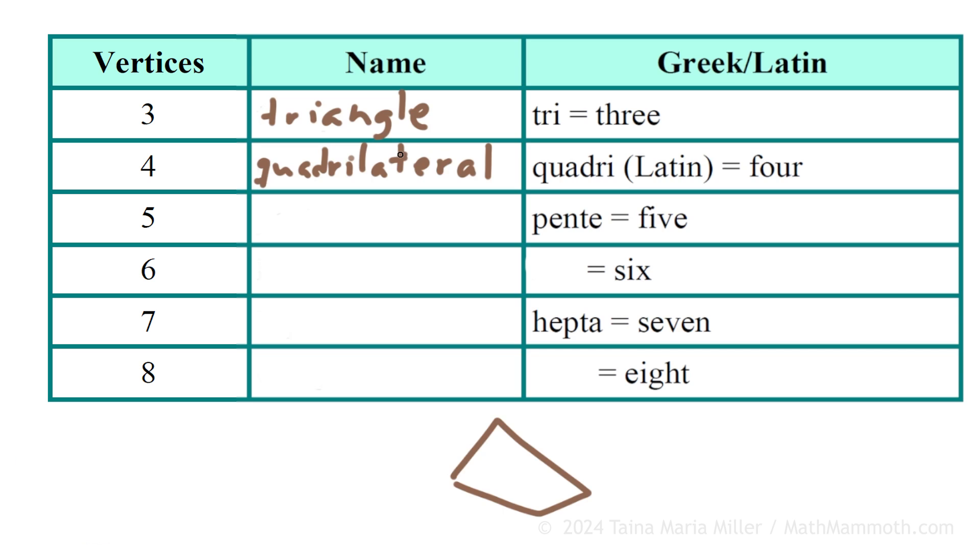And then what if it has five vertices or five corners? Then it's called pentagon. And the Greek word pente means five. Next one, if we have six corners, six vertices, what Greek word means six? It ends in X, yes. Hex. Can you tell? Hexagon, yes.